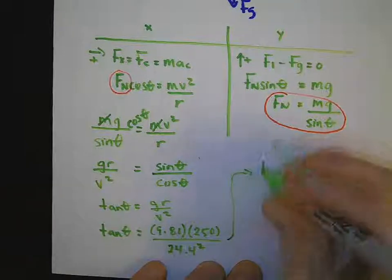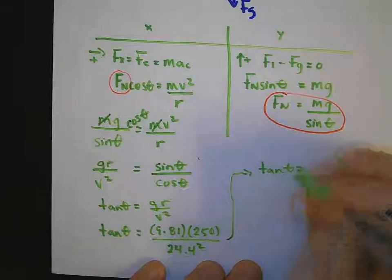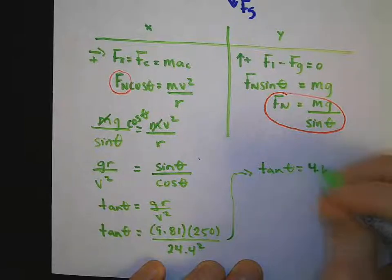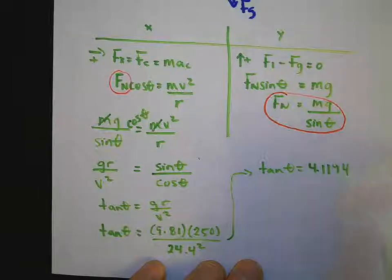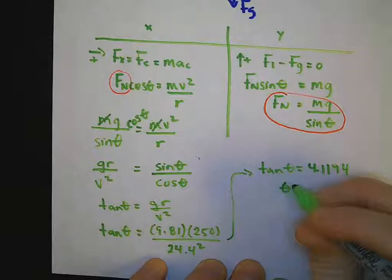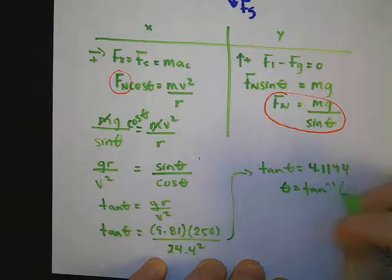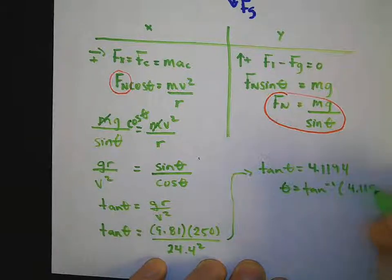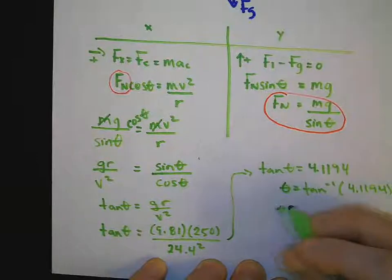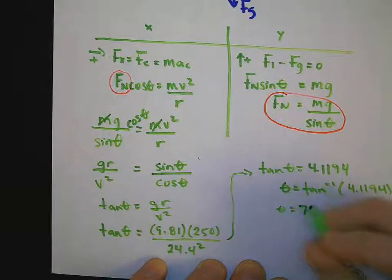So this gives us tan theta will be equal to 4.1194. So theta will be tan inverse, and we can calculate this to be 76 degrees.